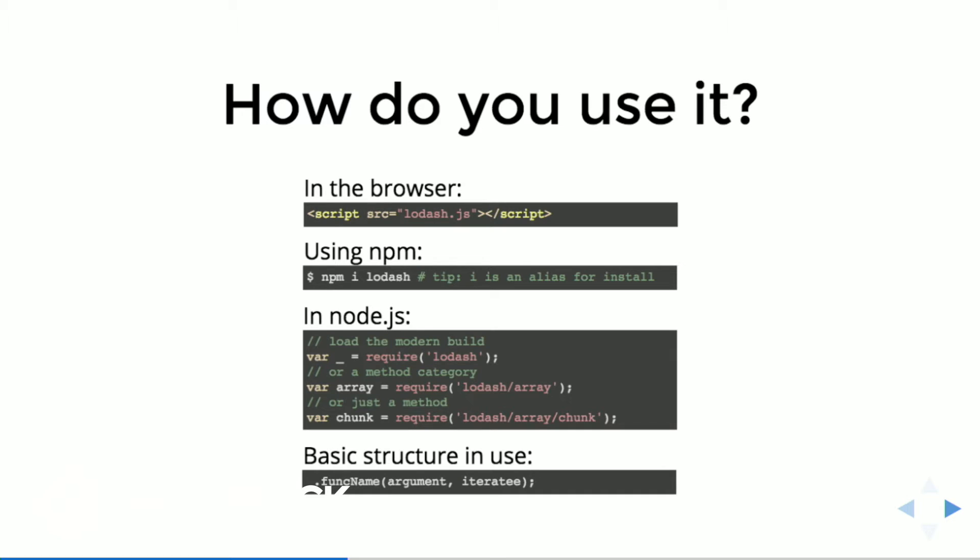This is the very basic structure of how you might use Lodash. You require it, you save it with the underscore, and then it's generally a function name and you pass in an argument. A lot of these functions also take in another function, similar to the sort function in JavaScript where you can pass in a comparator.